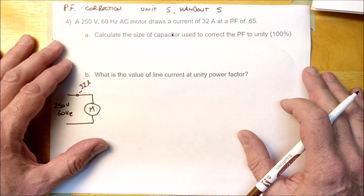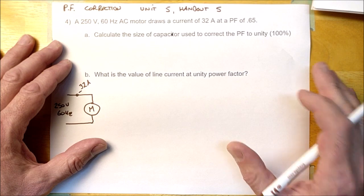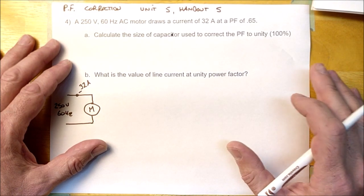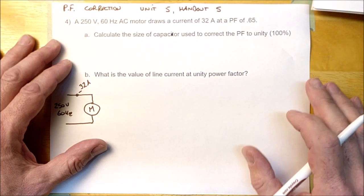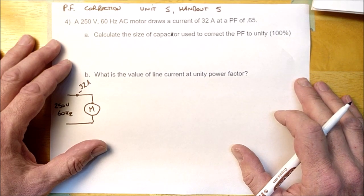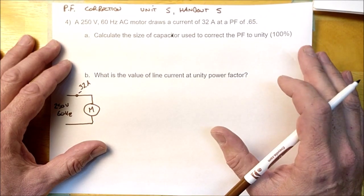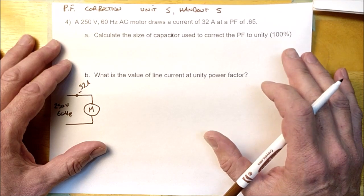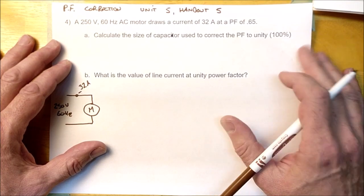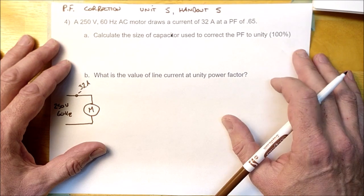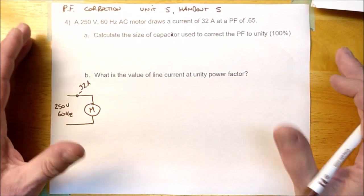They've got to supply all that current that nobody's paying for, and that annoys them. So what they do is they continue to charge those customers for the true power only, but they also monitor the customer's power factor. And if the power factor is worse than 90% or 0.9, they actually tack on an additional charge — a penalty for having a poor power factor. The extra charge is sufficiently high that it would encourage that customer to add capacitors to improve the power factor to at least 90%.